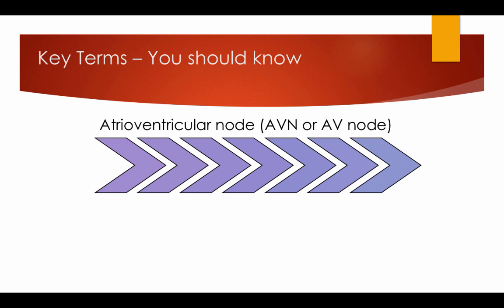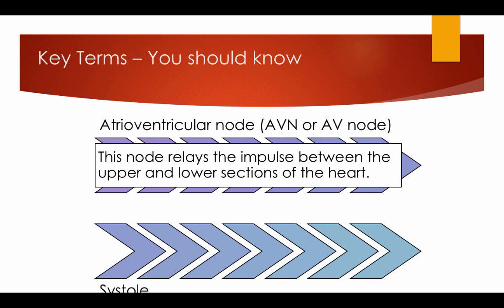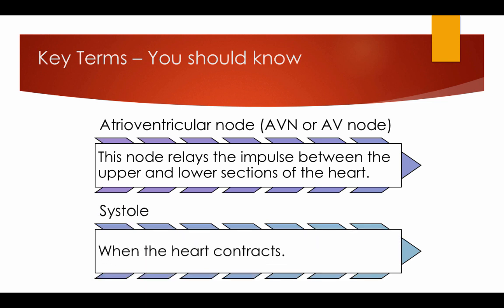Atrioventricular node, also known as AVN or AV node: the node relays the impulses between the upper and lower sections of the heart. Systole: when the heart contracts.